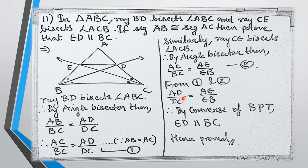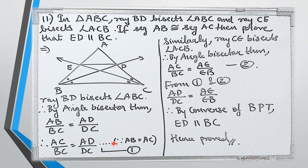Comparing equations 1 and 2, AC upon BC is common to both. Therefore the right-hand sides also match: AD upon DC equals AE upon EB. Looking at the diagram, AE upon EB equals AD upon DC. By the converse of the basic proportionality theorem, ED is parallel to BC. Hence proved.